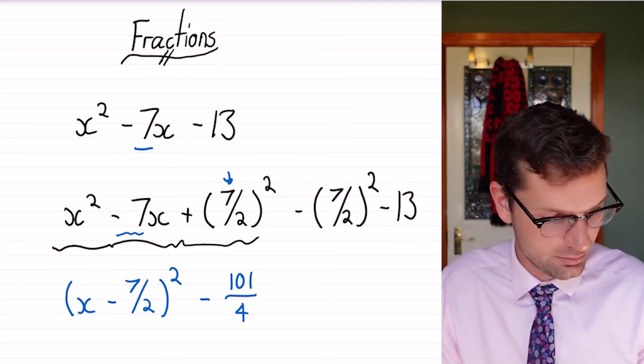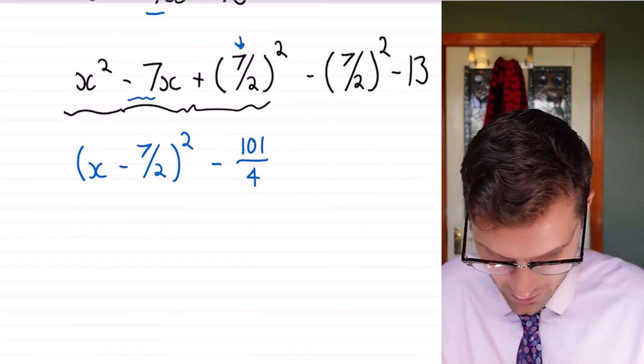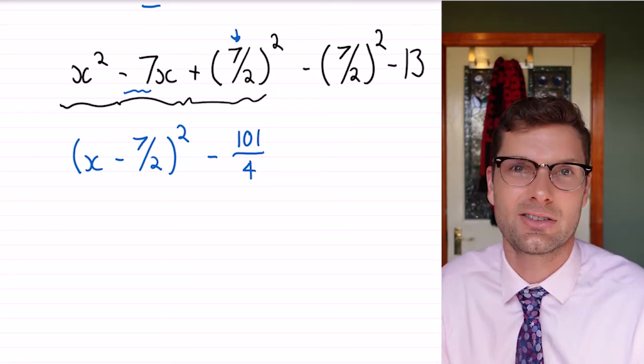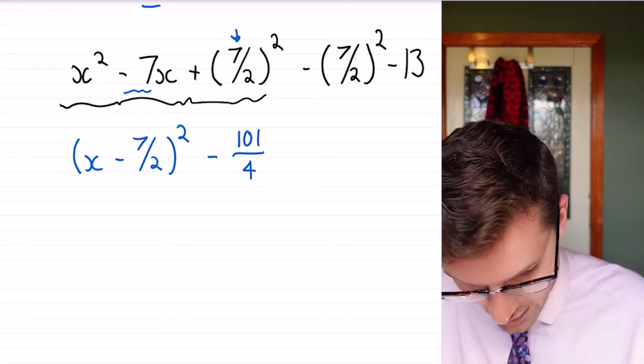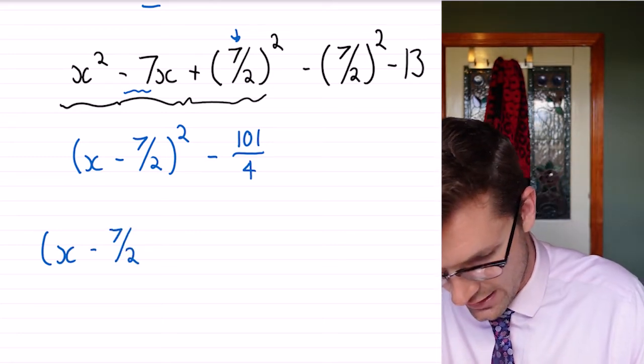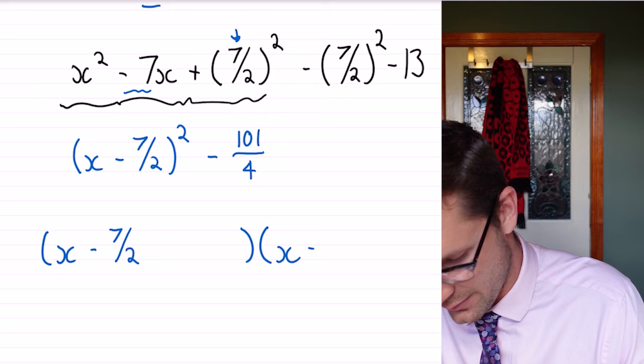So once we're at this step, you're kind of laughing, because we do again have this difference of two squares, so we just have to write it out twice. The first bracket is (x - 7/2). The second bracket has the exact same thing to start off.